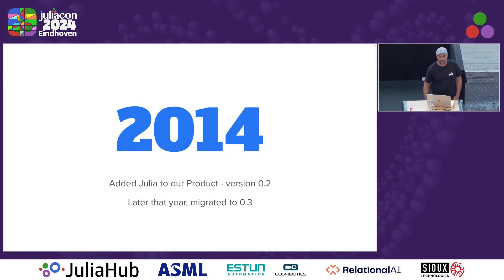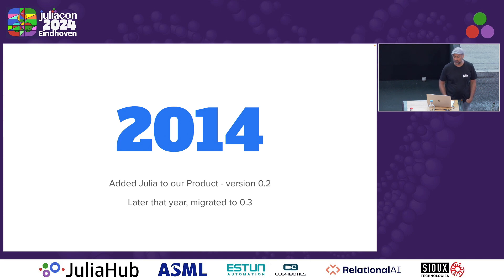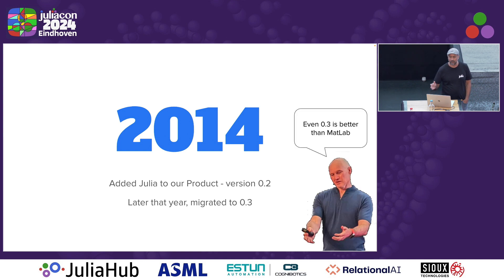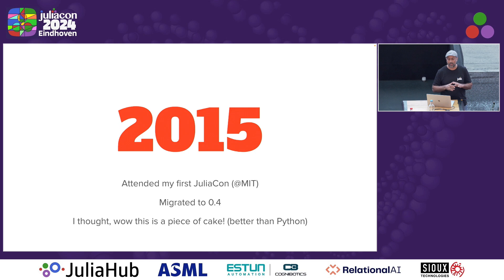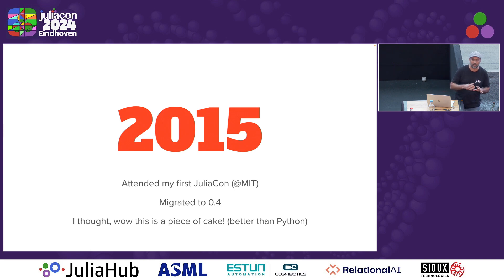We launched our product in 2011, but we only added Julia capabilities in 2014. At the time, we were using Julia 0.2, but we very quickly migrated to 0.3, because even 0.3 was better than MATLAB. Julia was moving very quickly, so by 2015 we migrated to 0.4. Our code base was fairly small and we had very few customers depending on this functionality. Julia was improving a lot, so I attended JuliaCon that year in 2015, and I was already convinced we're going to be using this language for a long time.